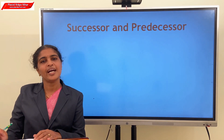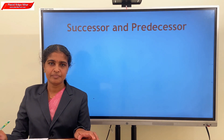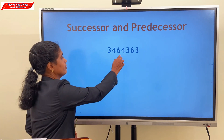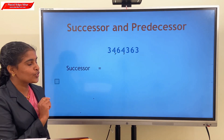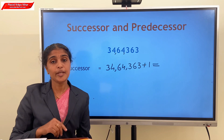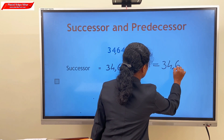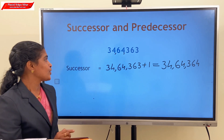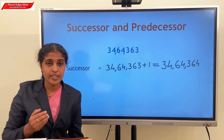Our next topic is successor and predecessor. The successor of a number is the number which is just after the given number. It can be obtained by adding 1 to that number. Consider the number 34,64,363. To get the successor, we add 1: 34,64,363 + 1 = 34,64,364. So the successor of 34,64,363 is 34,64,364.